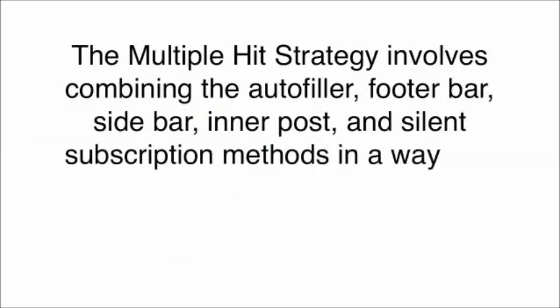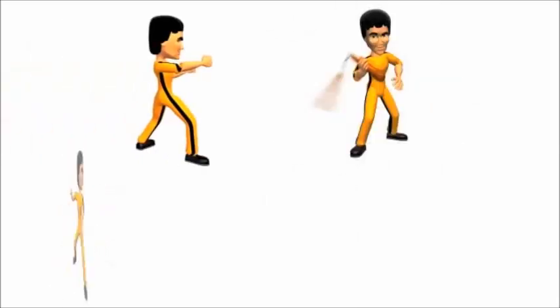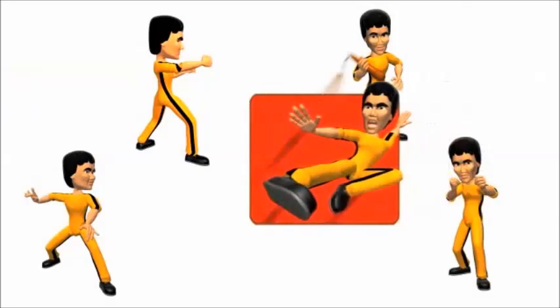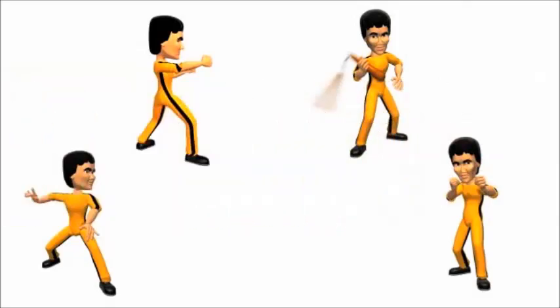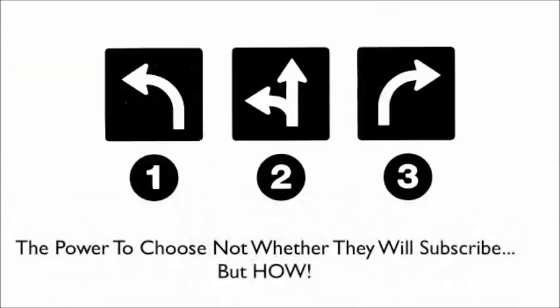Think of it as a full-on sniper attack that doesn't rest until the job's done. This is one of the most powerful list-building strategies available. We covered a small portion of this method earlier in the video, but the complete version is extremely powerful. Multiple-hit strategy involves combining an auto-filler, footer bar, sidebar, inner post, and silent subscription methods in a way that practically compels your visitor to subscribe without seeming like a nag. Multiple hits are always coming from different places and each has a unique delivery, so your visitor never feels like you're just trying the same thing over and over again. They feel like you are presenting them with options, giving them the power to choose — not whether they will subscribe, but how.